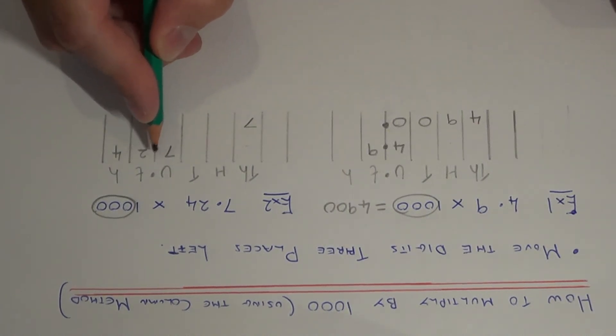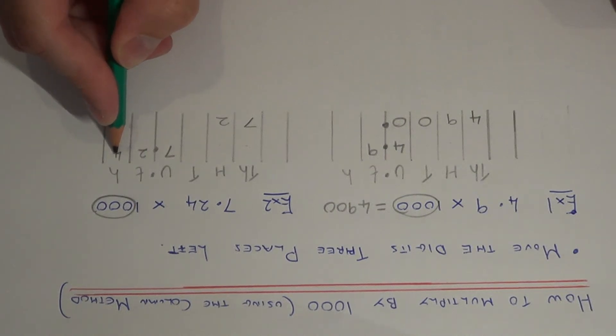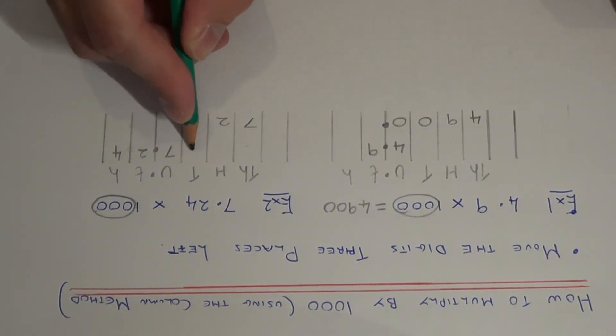Move the 2 next. One, two, three. So the 2's in the hundreds column. And finally, the 4, one, two, three. So the 4 goes in the tens column.